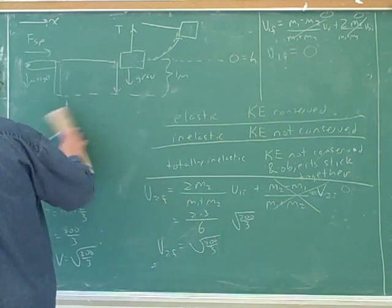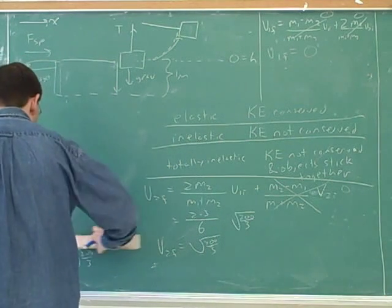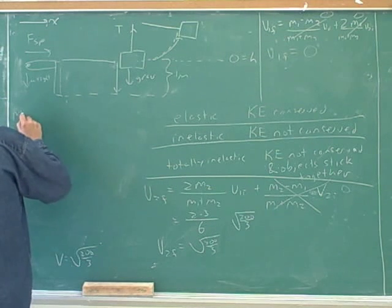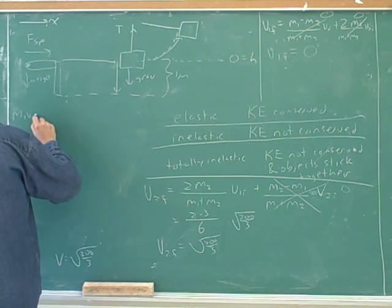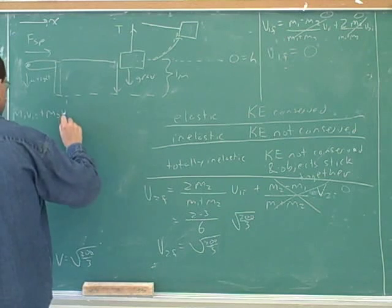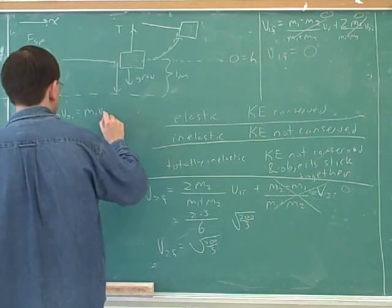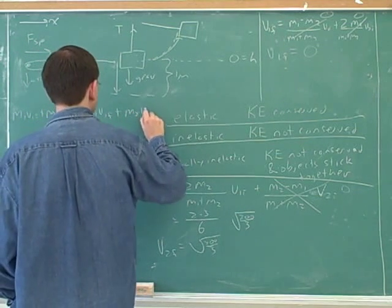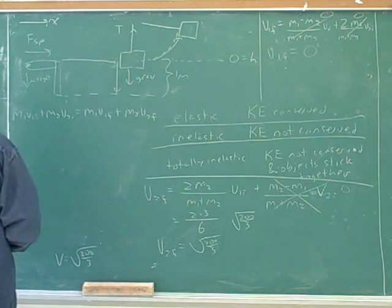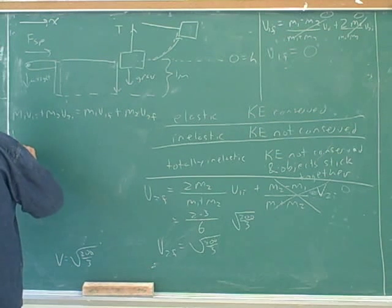Now where do those equations come from? Well, we use conservation of momentum. M1 V1 initial plus M2 V2 initial equals M1 V1 final plus M2 V2 final. That's conservation of momentum and conservation of energy.